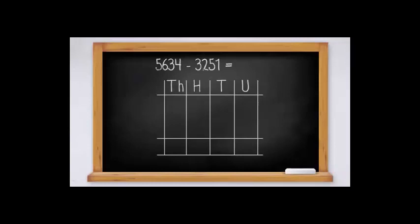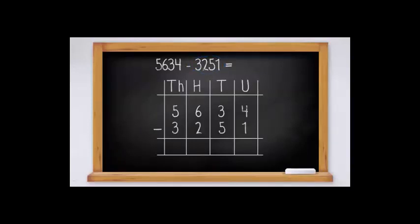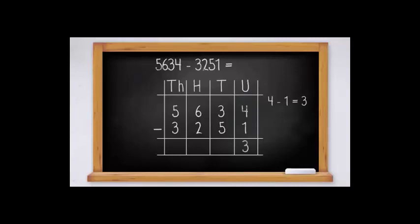Remember, when subtracting, the first number always goes on top. Here the first number is 5634, minus the second number 3251. Let's begin with the units place — it's always top number minus bottom. Units place: four minus one equals three. We write three under the units place column. Now we move on to tens place: three minus five.